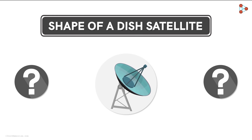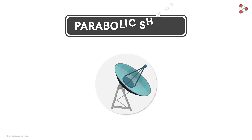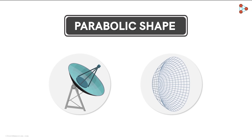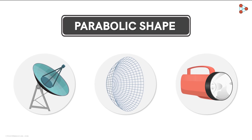Do you know what shape a dish satellite is called? That's right! A dish satellite is parabolic in shape, as we've seen in one of our previous videos. It's made up of this type of curve. We can find many such examples of parabolic surfaces in our daily lives. One of them is the mirror used in a flashlight, which is also made up of this type of curve.